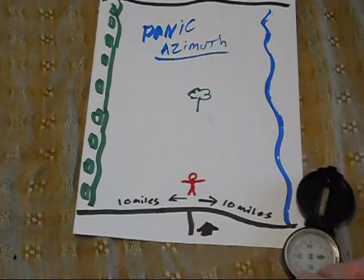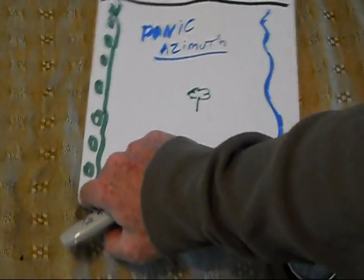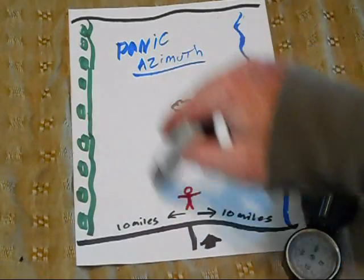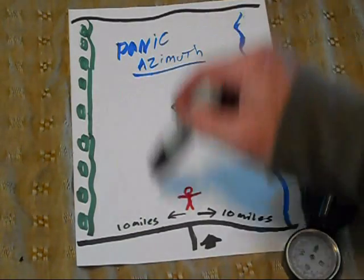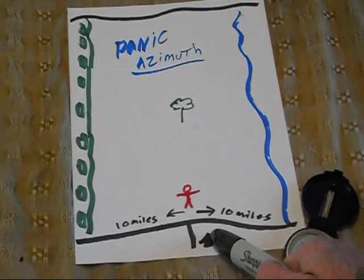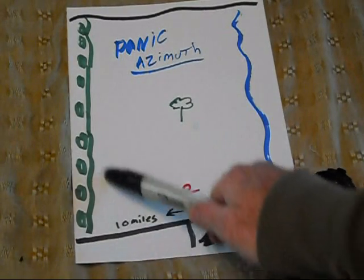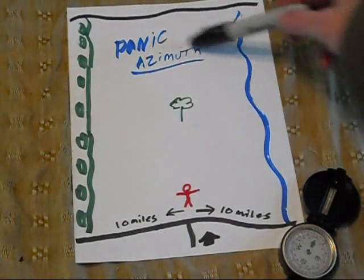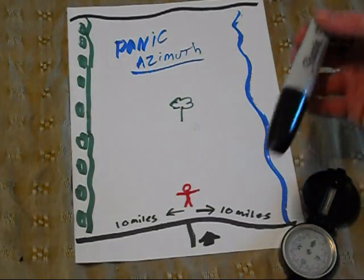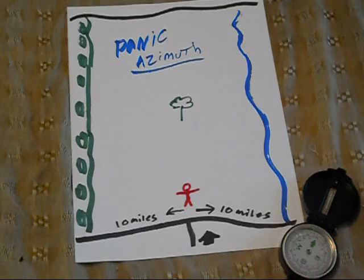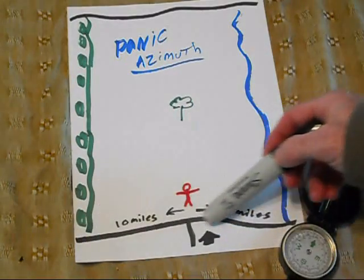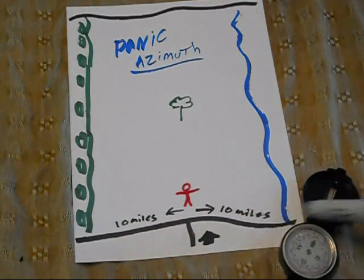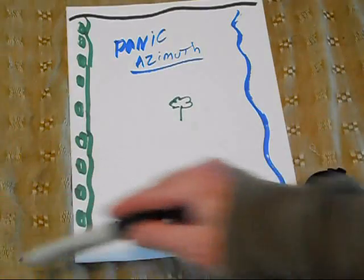Right now I want to talk about the panic azimuth. An easy way to keep yourself from getting lost in the woods — say you're going to head out — is to shoot a panic azimuth. The scenario I gave was: here's my little house, and there's a big lot of about five square miles of woods. I want to go explore that five square miles of woods. I know the road outside my house runs for over 10 miles in each direction.